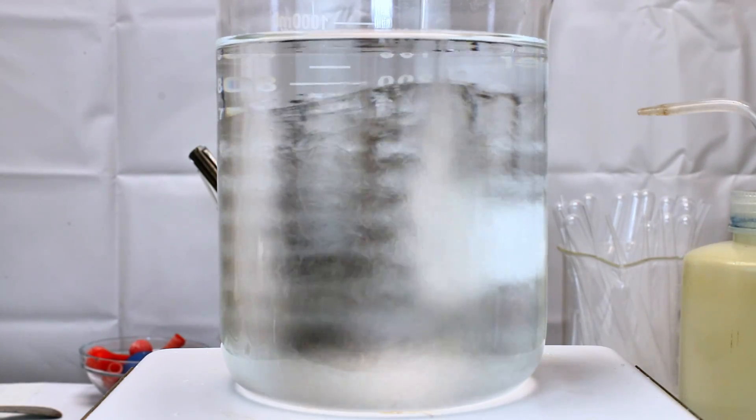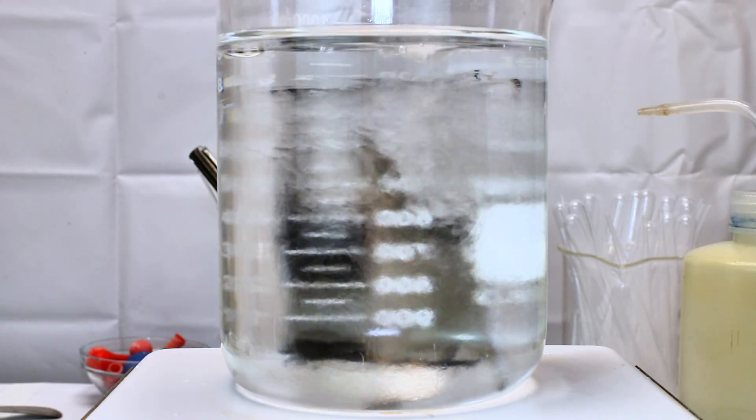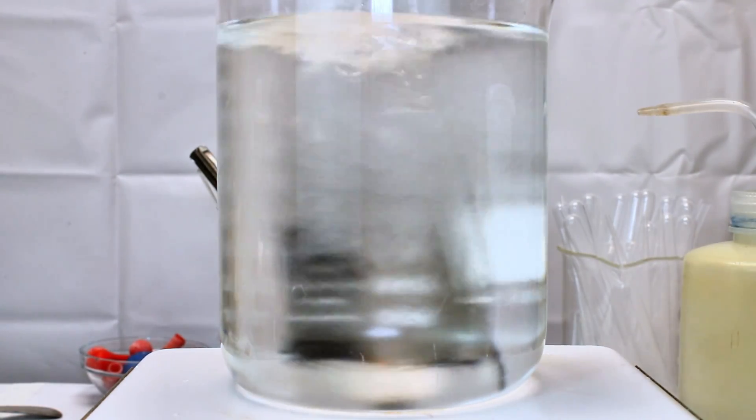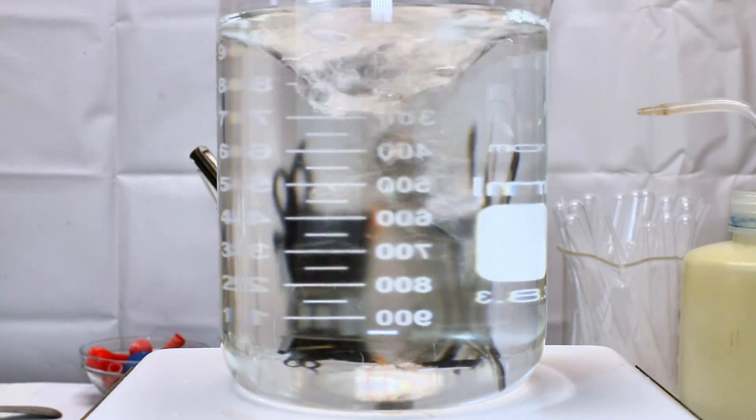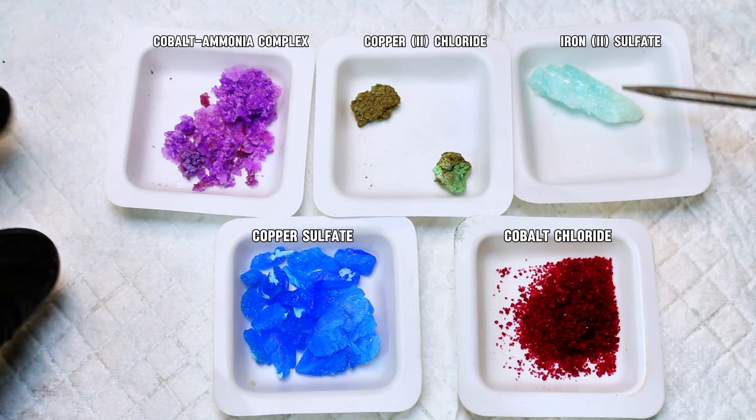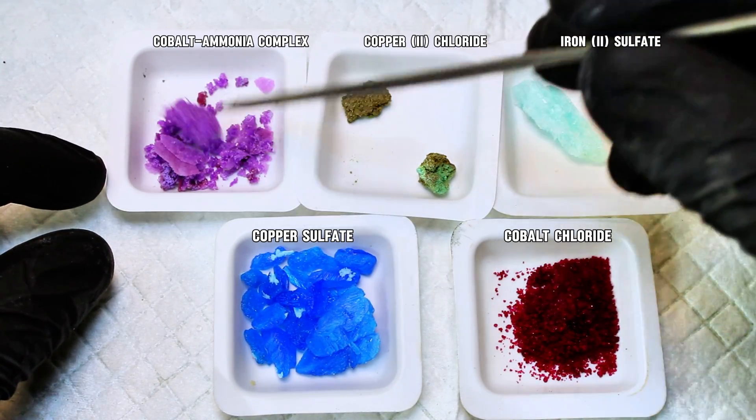For the next step, all you really need are some transition metal salts, and I chose to first try iron sulfate, copper sulfate, copper chloride, cobalt chloride, and tetramine cobalt chloride. Once you've decided what salts you're going to use, all you have to do is select a few crystals and carefully add them to the dilute solution of sodium silicate.